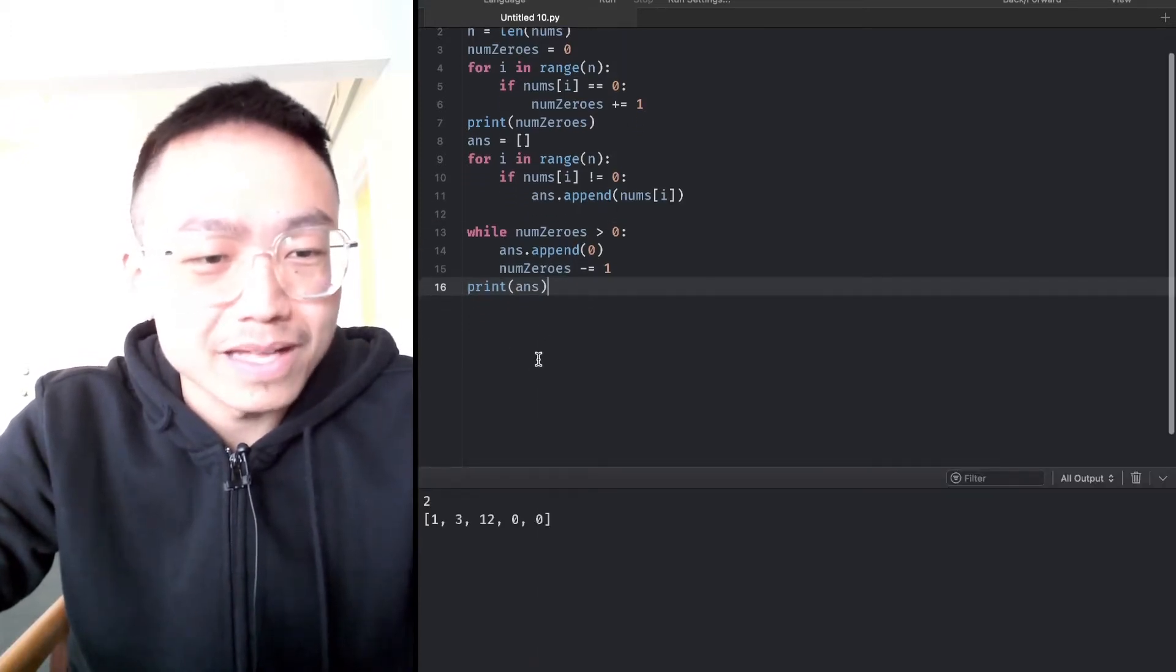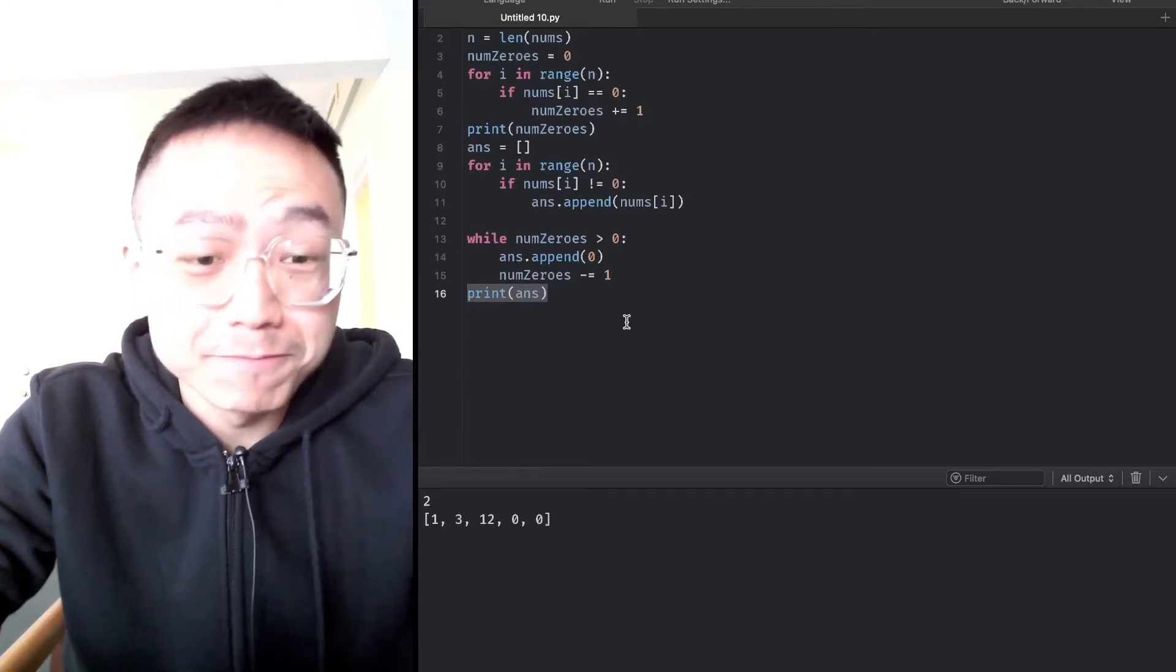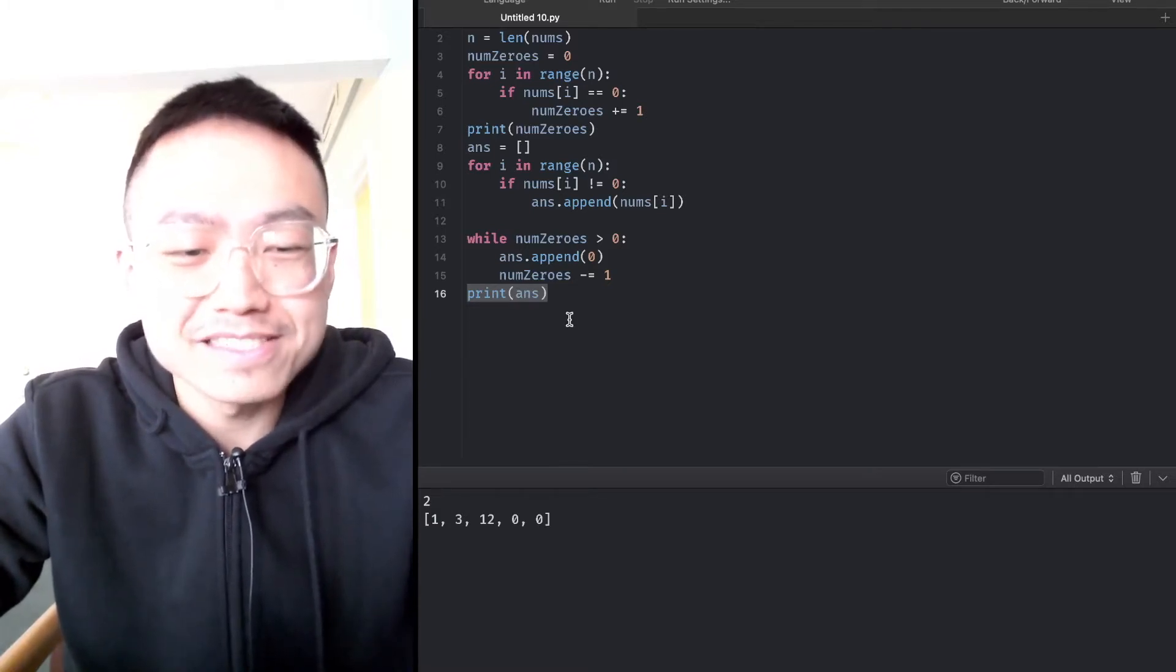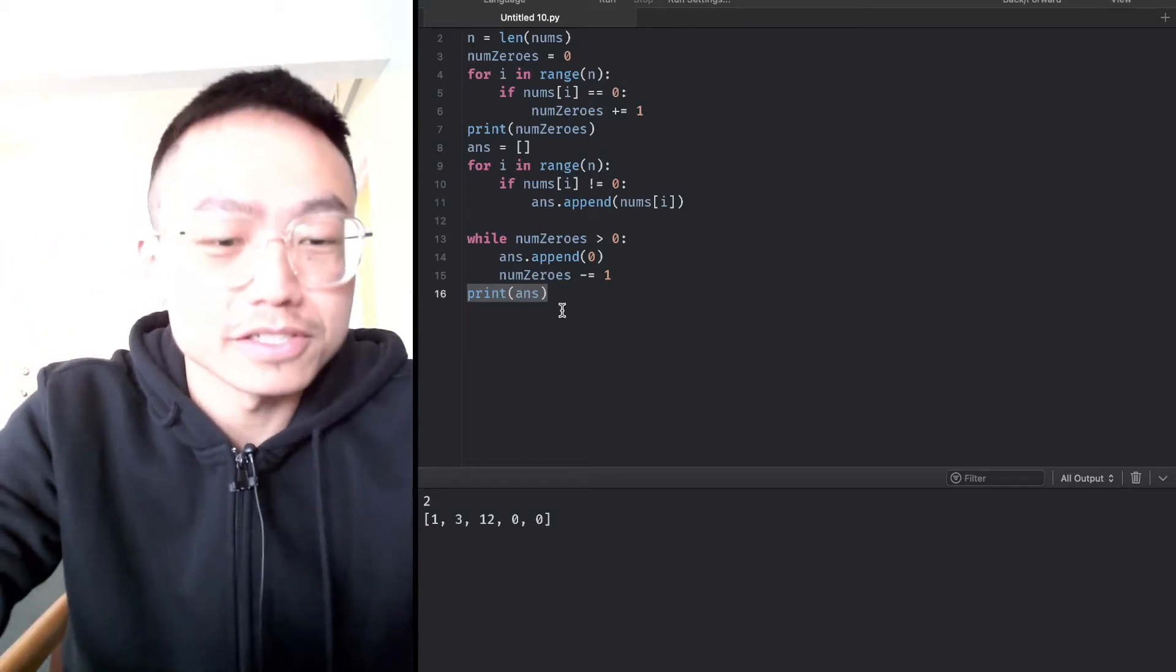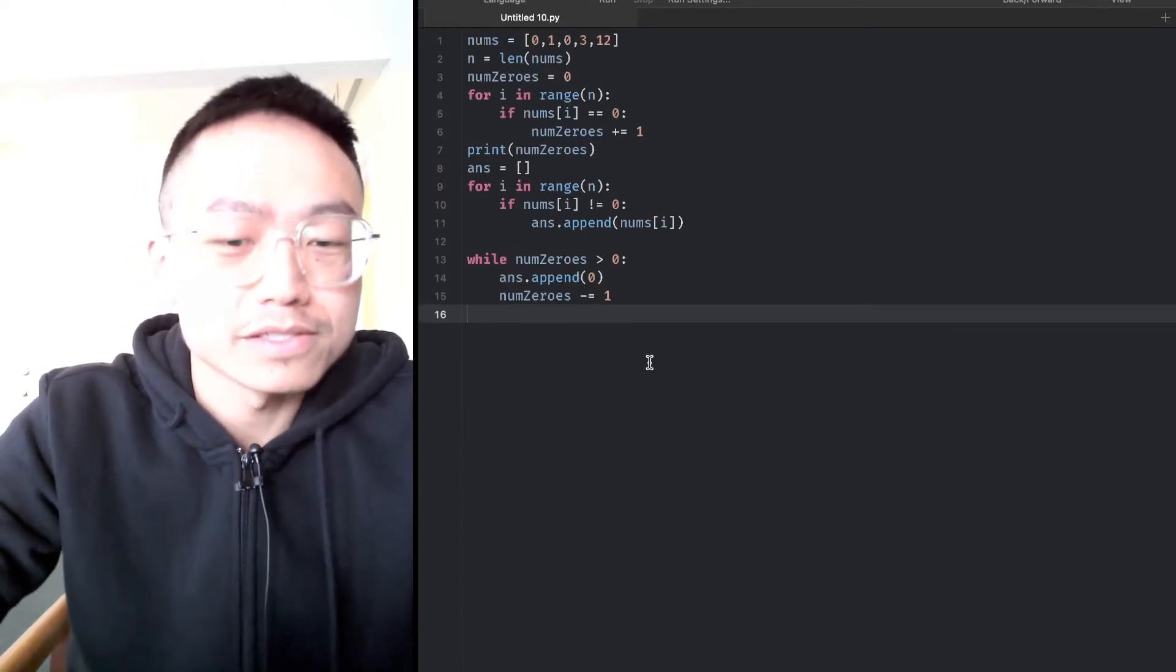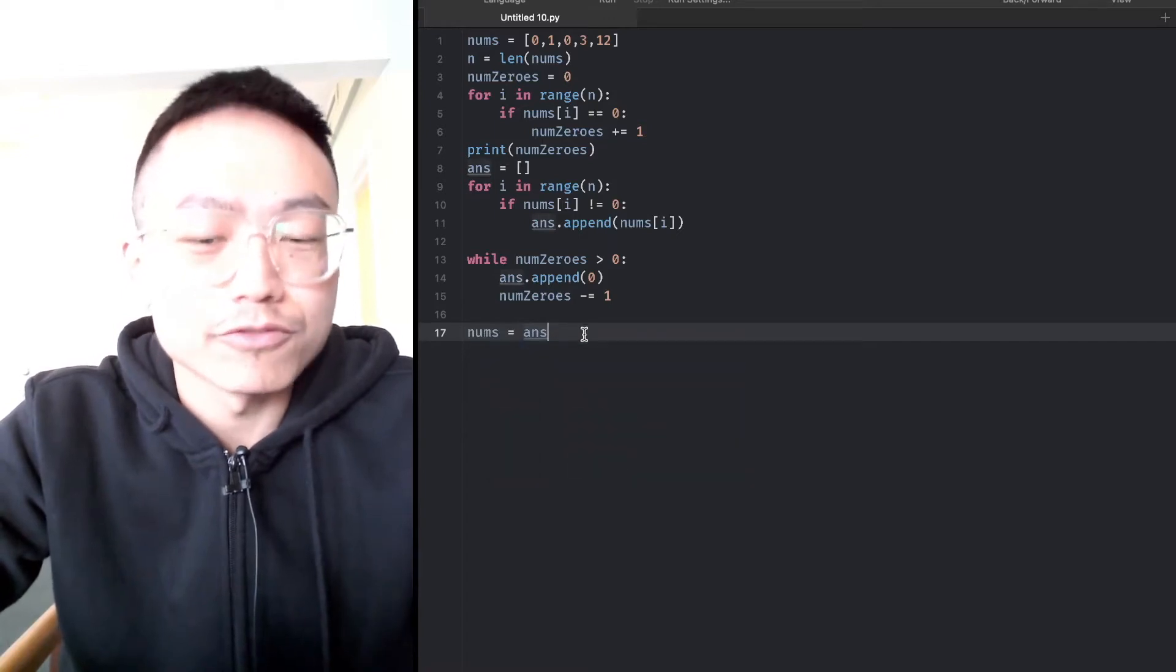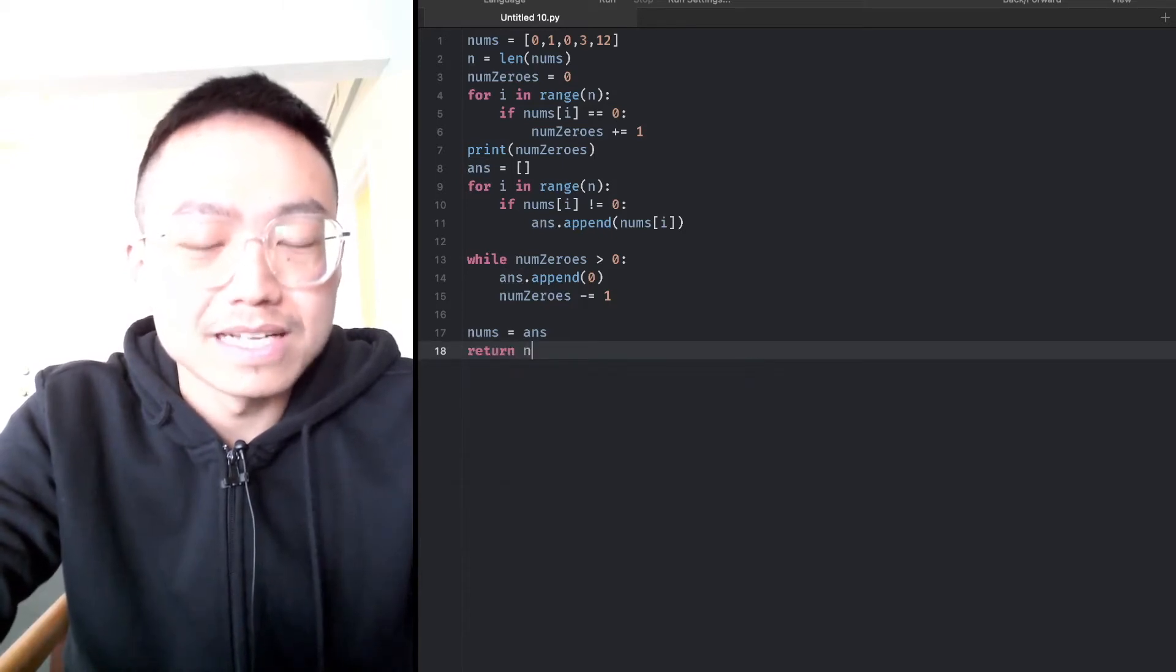And actually, this is our answer. You may notice the time complexity is O(n). However, the total number of operations are suboptimal. Because we combine the result, the time complexity is O(n). Because we need to return nums itself, nums gets the value from ans. Finally, we return nums itself.